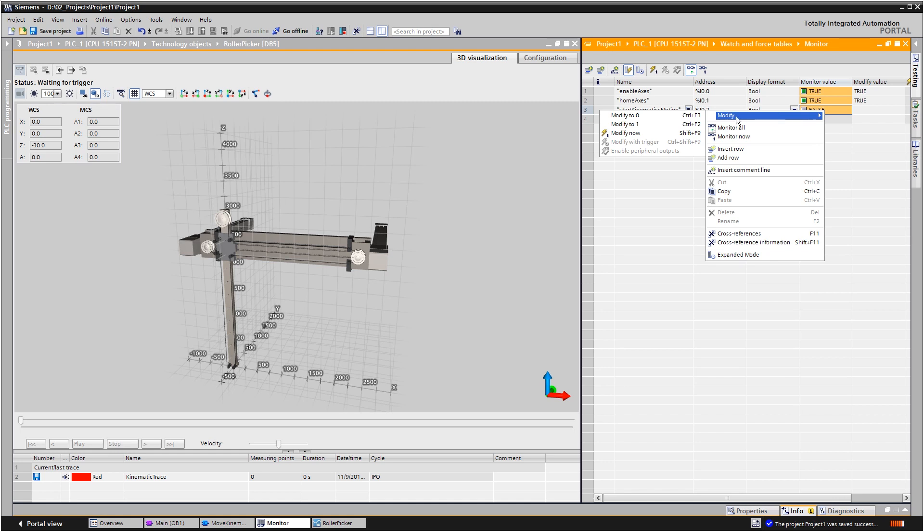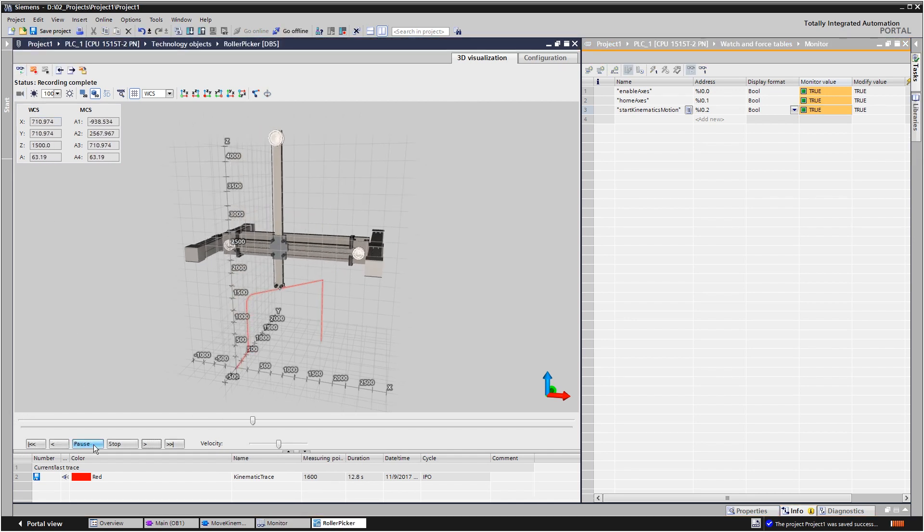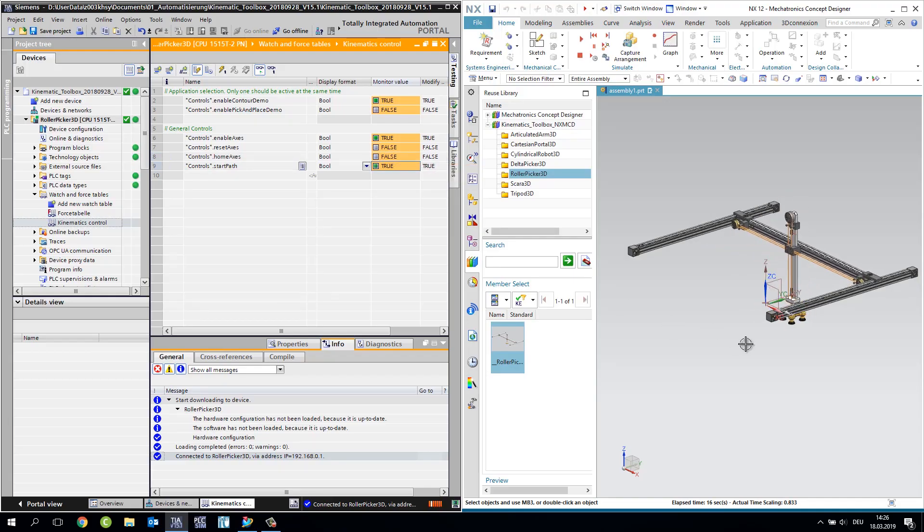A powerful kinematic trace is available for visualization and optimization of complex motion control sequences of handling systems with up to four interpolating axes. TIA Portal offers an interface to NX Mechatronics Concept Designer, short NX MCD, to avoid errors in the planning phase and for risk-free automation software testing. This enables comprehensive testing and optimization of the automation software on the digital twin during the design phase of the application. This saves time and money during commissioning and reduces time to market.